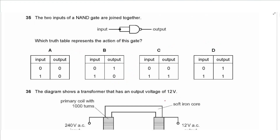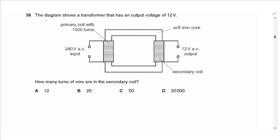Question 35 is about logic gates, which have been removed from the syllabus. When both inputs of a NAND gate are joined together, it creates a NOT gate. A NOT gate reverses the input: input 0 gives output 1, input 1 gives output 0. Answer is B.